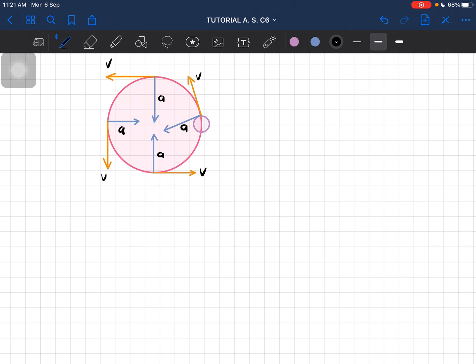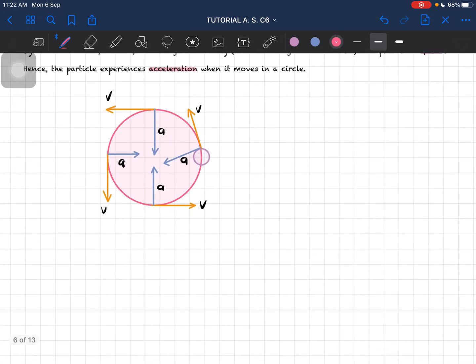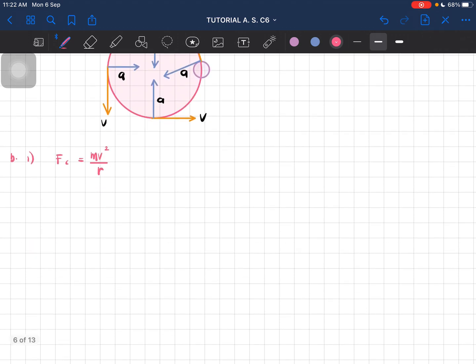For the centripetal force in terms of m, v, and r, we know that the centripetal force is equal to mv squared over r.